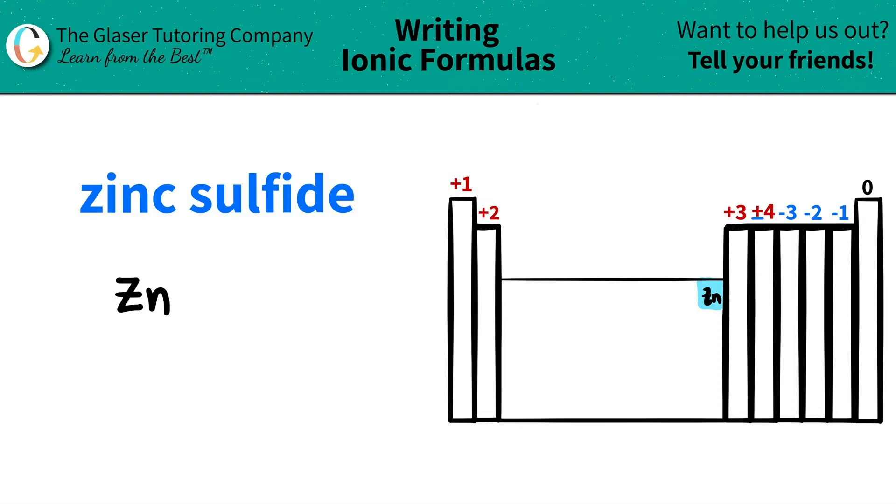Zinc is a special one. I would star this element out. Even though it's part of the transition metals, zinc only has one charge. So technically you should memorize that charge. Zinc is always going to be a plus two. It's going to always want to lose two electrons. Now we're moving on.